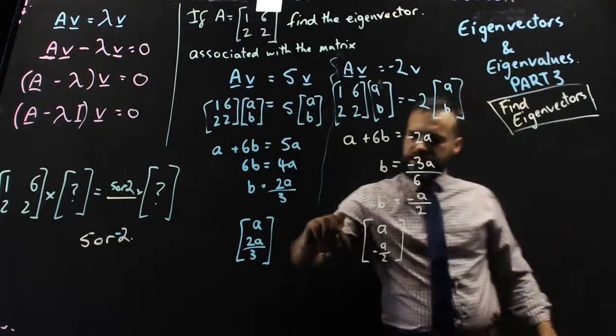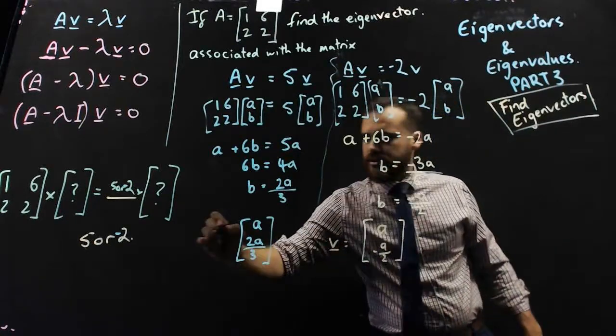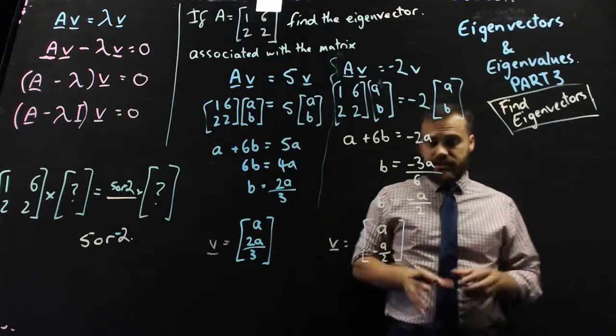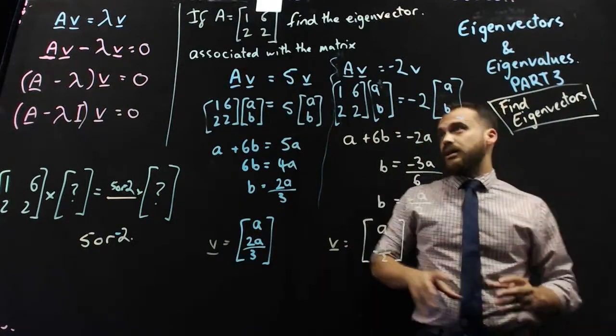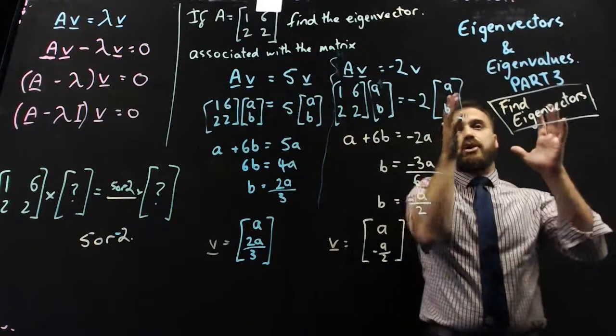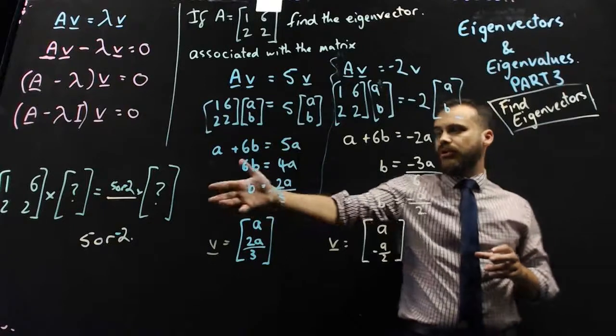All right, so there's our two eigenvectors here. Now that's the end of this thing. So what we're really saying is that if we have a matrix, 1, 6, 2, 2, there are going to be some eigenvalues, only two of them, 5 or negative 2.